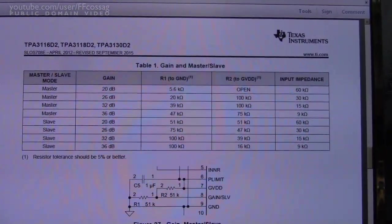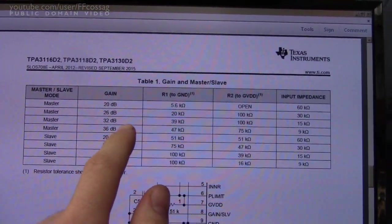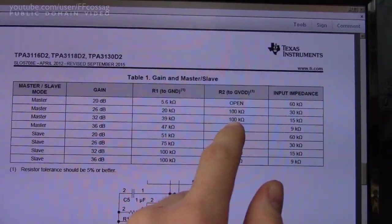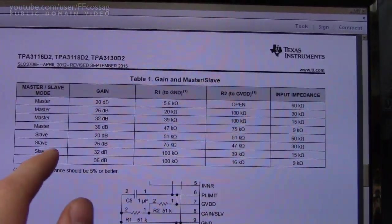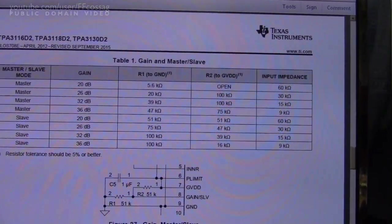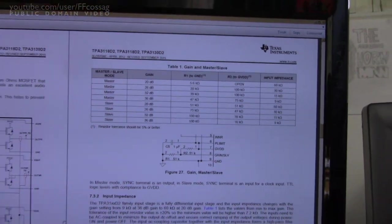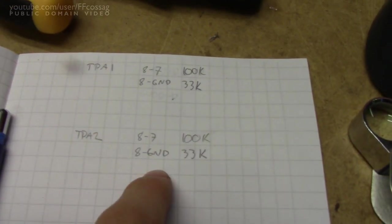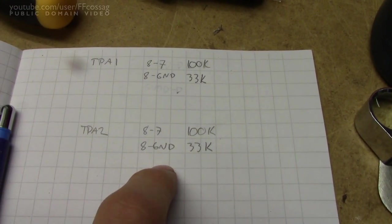It seems to be mostly just inverted. If you have a master set for 32 decibels of gain, you have 39k and 100k, but if you have a slave set for 32 decibels, you've got 100k and 39k.